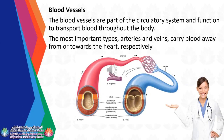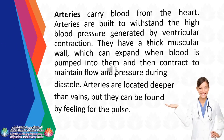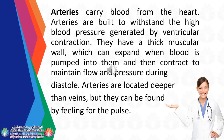The blood vessels are part of the circulatory system and function to transport blood throughout the body. The most important types, arteries and veins, carry blood away from or towards the heart, respectively. Arteries carry blood from the heart and are built to withstand the high blood pressure generated by ventricular contraction. They have a thick muscular wall, which can expand when blood is pumped into them and then contract to maintain flow and pressure during diastole. Arteries are located deeper than veins, but they can be found by feeling for the pulse.